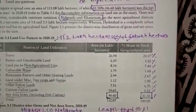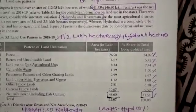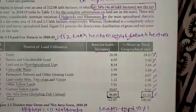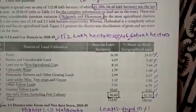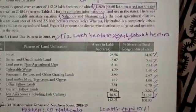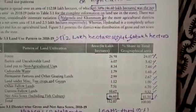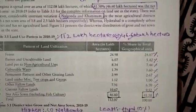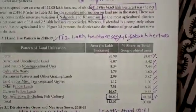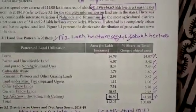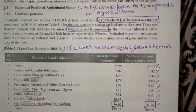Land put to non-agriculture use is 8.8 lakh hectares, cultural waste is 1.79, permanent pasture is 2.99, land for miscellaneous trees and crops is 1.112, other fallow lands is 7.51, current fallow lands is 10.67, and net sown area including fish culture is 46 lakh hectares.